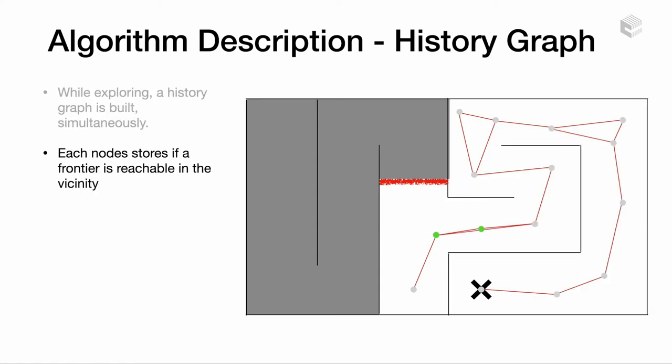Notice that the graph just has two nodes that are active, meaning that these nodes are the only ones close enough to a frontier.